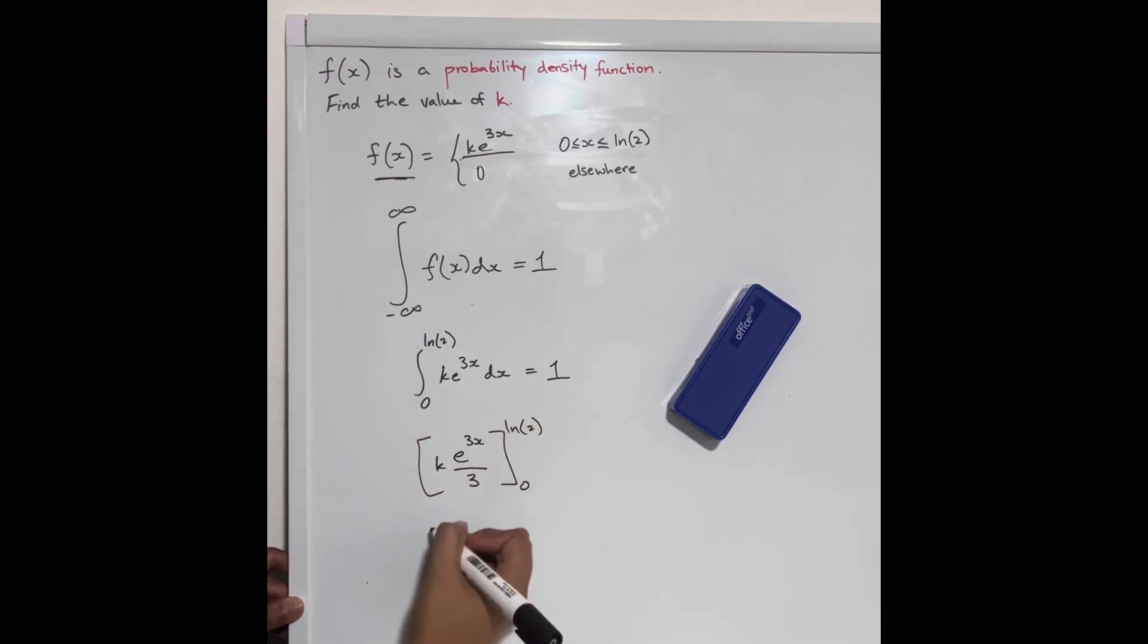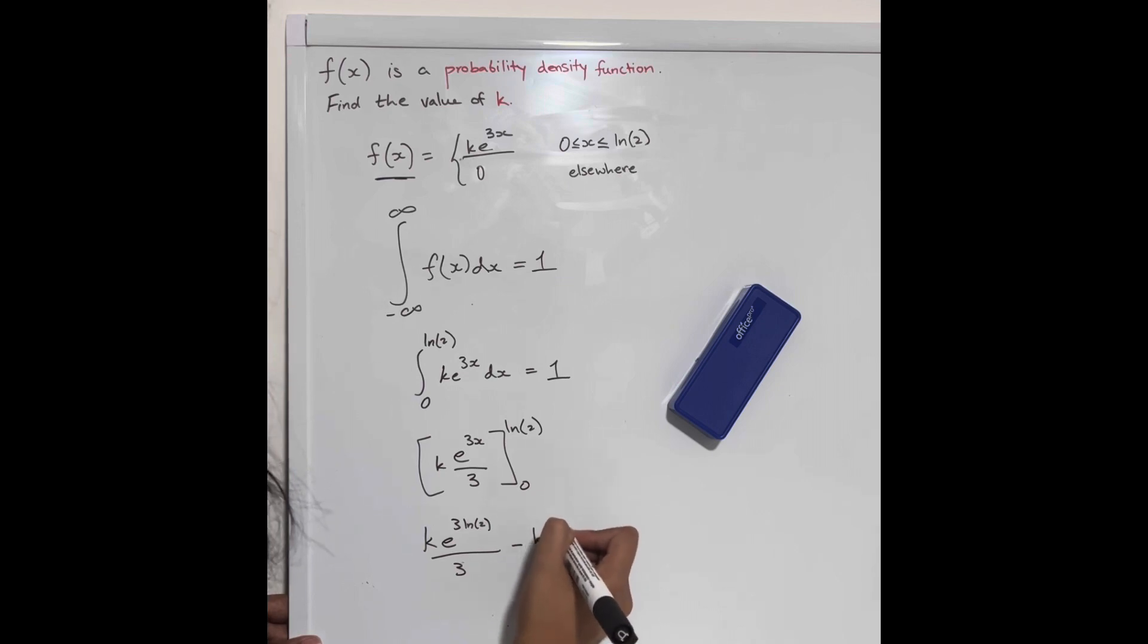Let's sub that in, so that's going to be the same as k times e to the 3 times ln 2, all divided by 3, minus k times e to the 3 times 0 over 3.